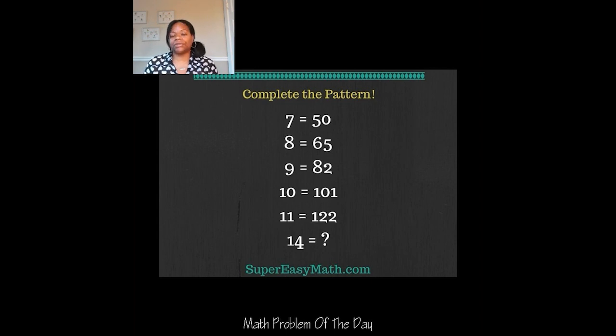And then I said, let me see if the pattern is the same for the next one. So 8 times 8 is 64, and then you add 1 to get the 65. And then I thought, well, maybe that's my pattern all the way through. So 9 times 9 is 81, and then you add 1, you get 82.